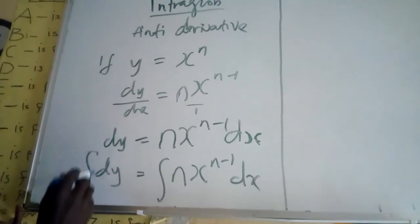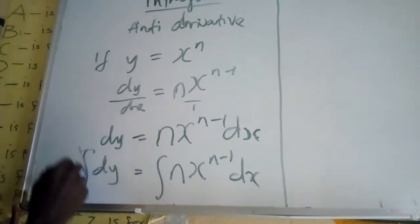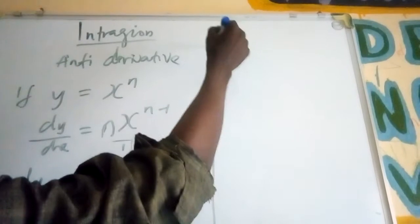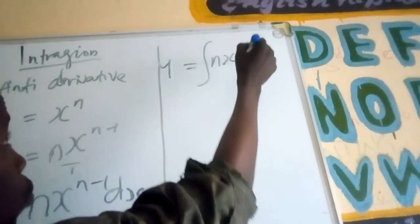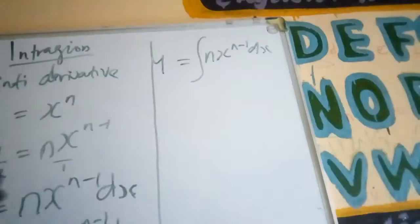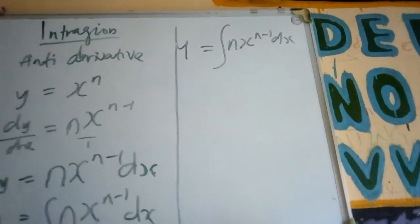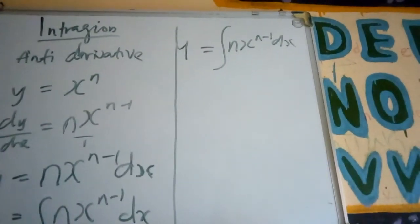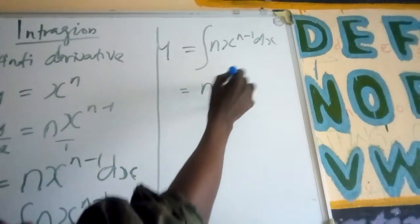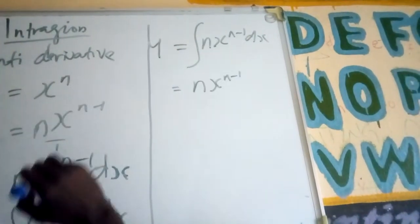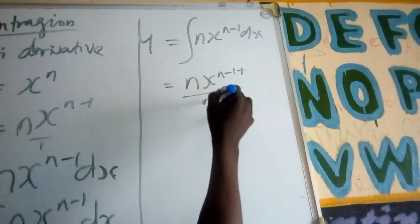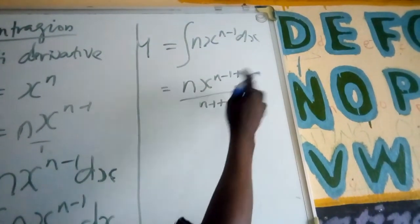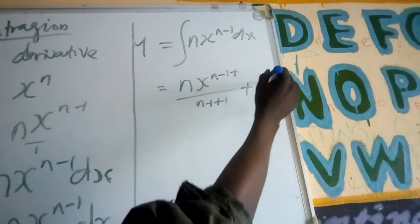The integral of dy by dx — okay, this integral cancels the derivative — we have y. This equals to integral of n x power n minus 1 dx. So, if you want to integrate this, this is n x power n minus 1, then plus 1 over n minus 1 plus 1, plus constant.